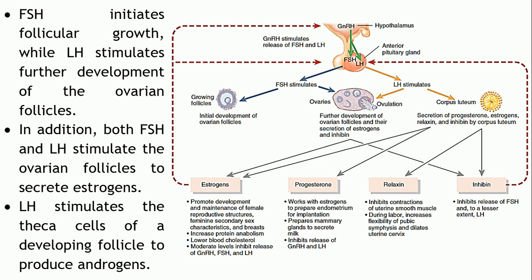FSH acts mainly on the ovaries for the development of the follicles. LH stimulates the further development of the ovarian follicles. Both FSH and LH play an important role in follicular development. In addition, both FSH and LH stimulate the ovarian follicles to secrete estrogen, and LH also stimulates the follicles to produce more and more estrogen.